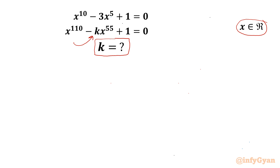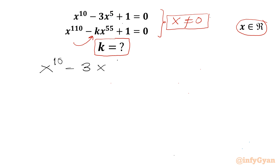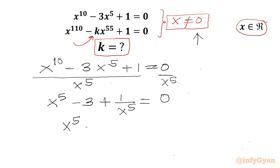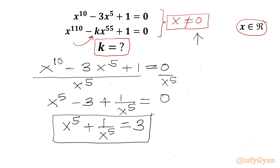So let's get started. By observing the given equations we can conclude x cannot be equal to 0, as it is not satisfying the given equations. I will begin with the first equation: x power 10 minus 3 times x power 5 plus 1 equal to 0. I will divide both sides by x power 5, since x is not equal to 0. So I get x power 5 plus 1 over x power 5 equal to 3. I will call this equation number 1.